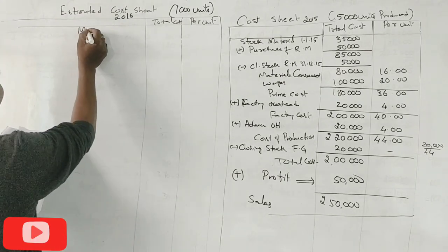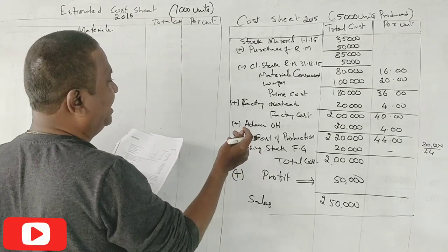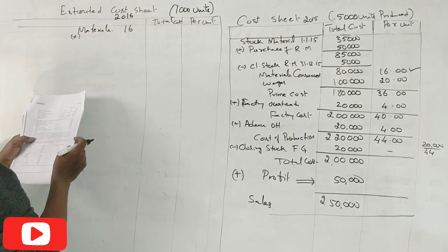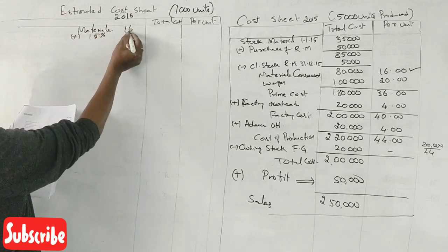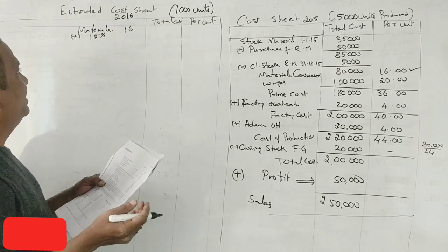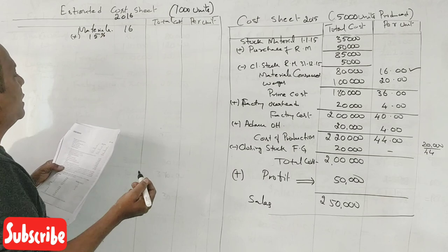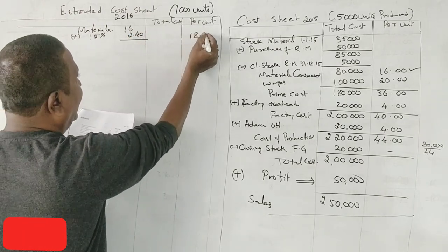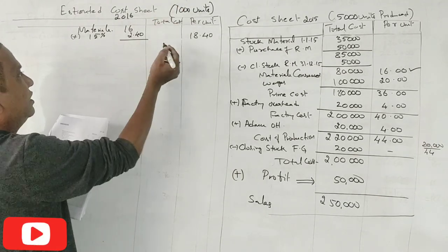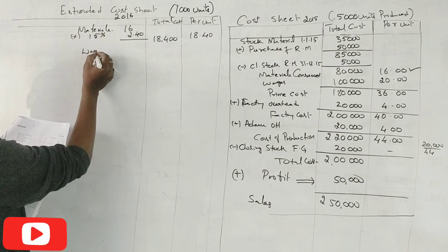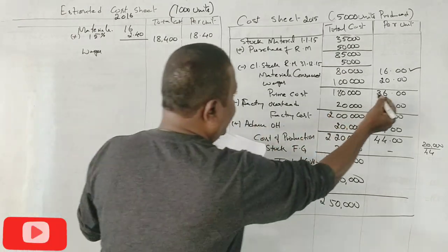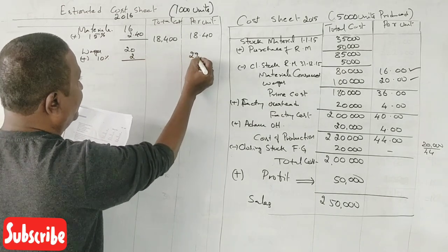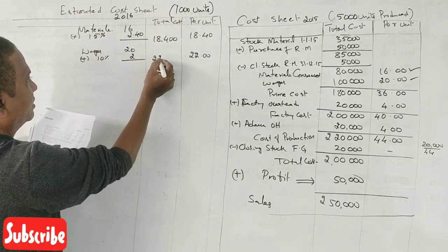For materials: per unit material cost is ₹16. Material is increased by 15%. So 16 × 15/100 = ₹2.40 increase. Per unit material becomes ₹18.40. For 1,000 units: 18.40 × 1,000 = ₹18,400. For wages: wages per unit is ₹20, increased by 10% — that is ₹2 increase. So ₹22 per unit. 22 × 1,000 = ₹22,000.